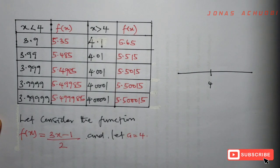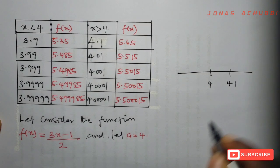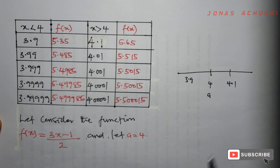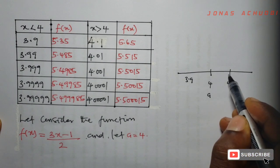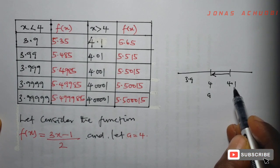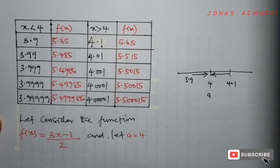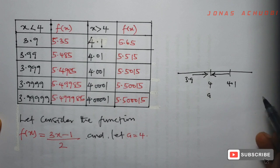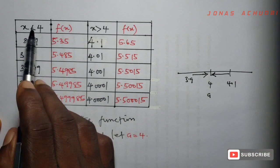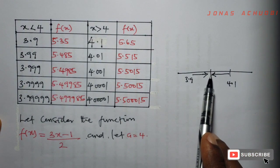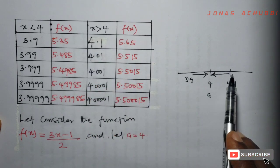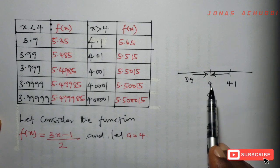Point 4 is here on the number line. There's a point after 4, which is 4.1, and there's a point before 4, which is 3.9. So our point a is 4. We want to observe what happens as x approaches 4 from the right of 4 and as x approaches 4 from the left. Now let's look at this table. The column x less than 4 shows values on the left of 4 moving towards it, and the column x greater than 4 shows values on the right of 4 coming towards the point 4.